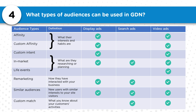You also have custom match — based on what you know about your customers' activities. Notice that video ads are available to every one of these audience types because of YouTube. Google knows people's interests and habits based on the videos they watch, so video ads are a very powerful tool for any one of these audience types.